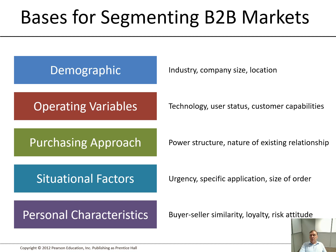In business-to-business markets, things are a little different. Companies use demographic factors such as industry, company size and location, as well as operating variables like technology, user status and customer capabilities. The purchasing approach covers power structure and nature of existing relationships. Situational factors include urgency, specific application, or size of order. Personal characteristics include familiarity between the buyer and seller.